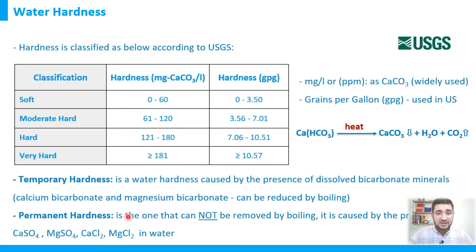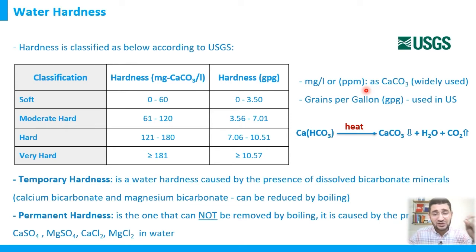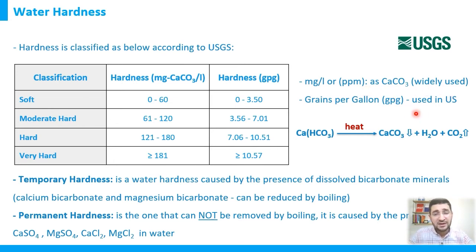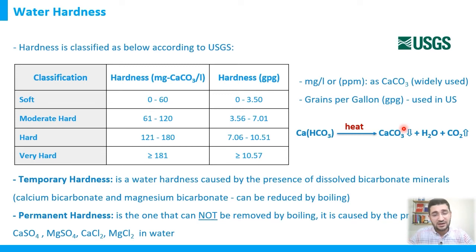The most widely used measurement unit for hardness is mg/L (or ppm) as calcium carbonate, used in many countries worldwide. In the USA, the unit gpg (grains per gallon) is also commonly used. You can convert between mg/L as CaCO3 and gpg using a simple multiplication factor.